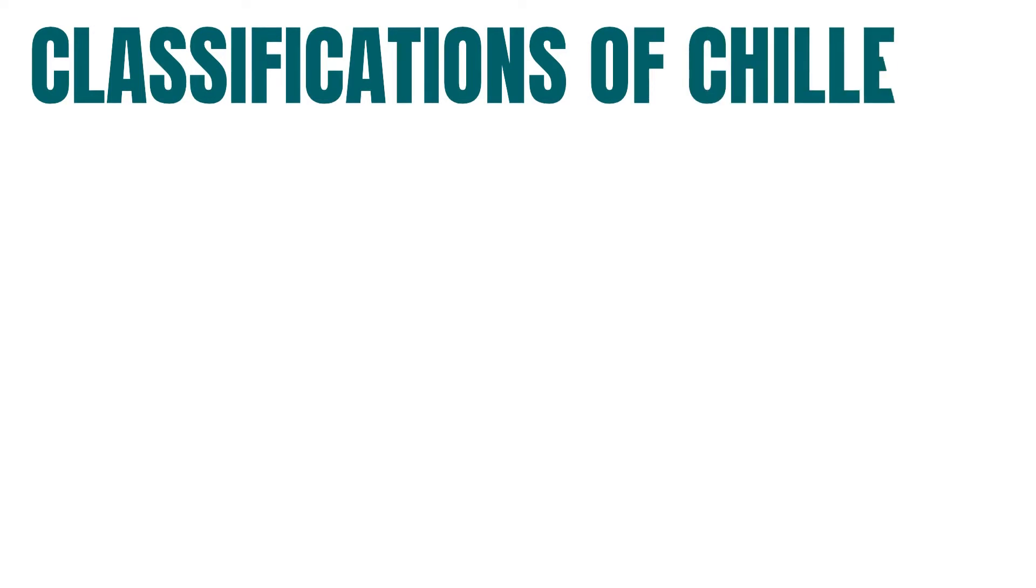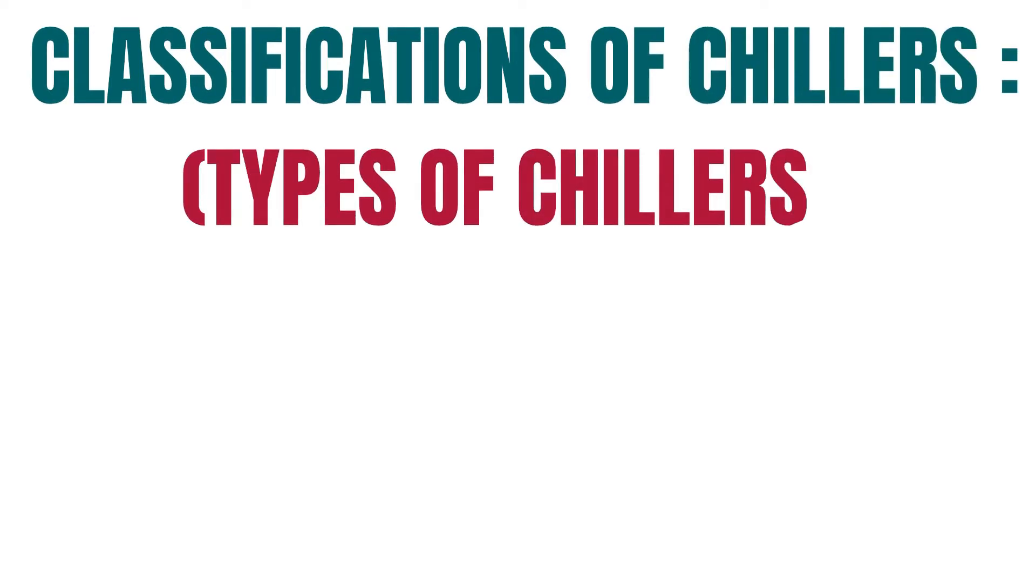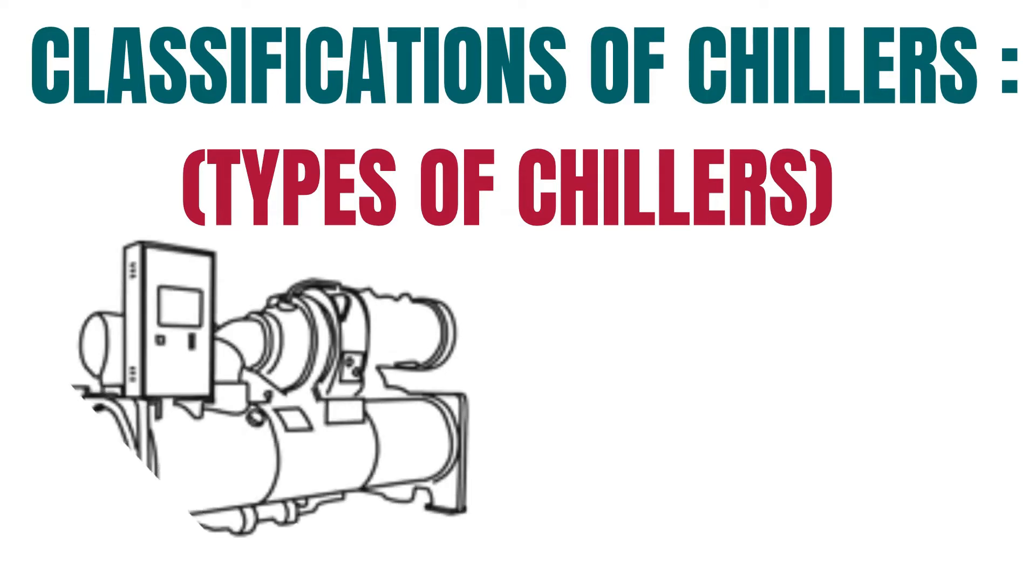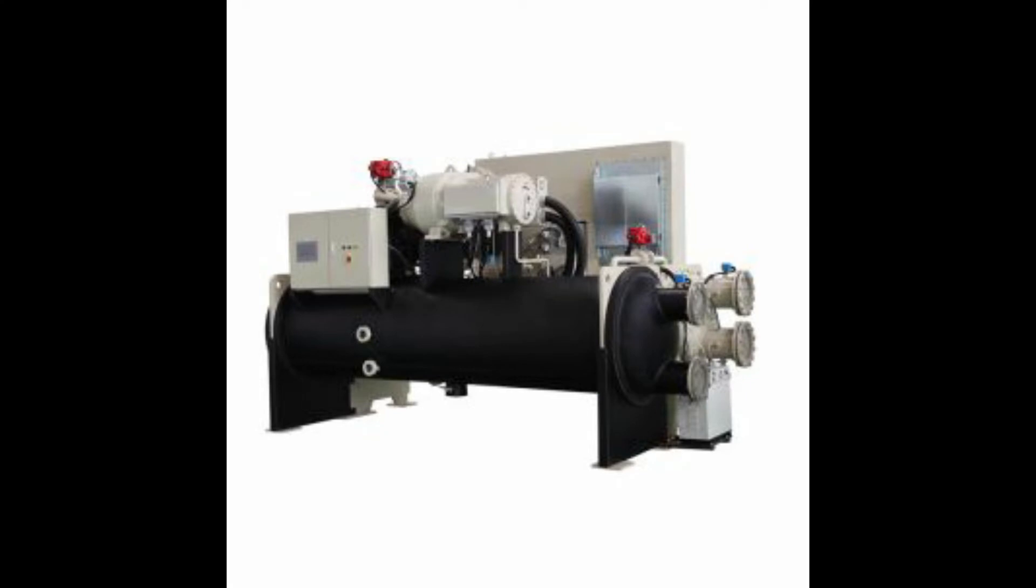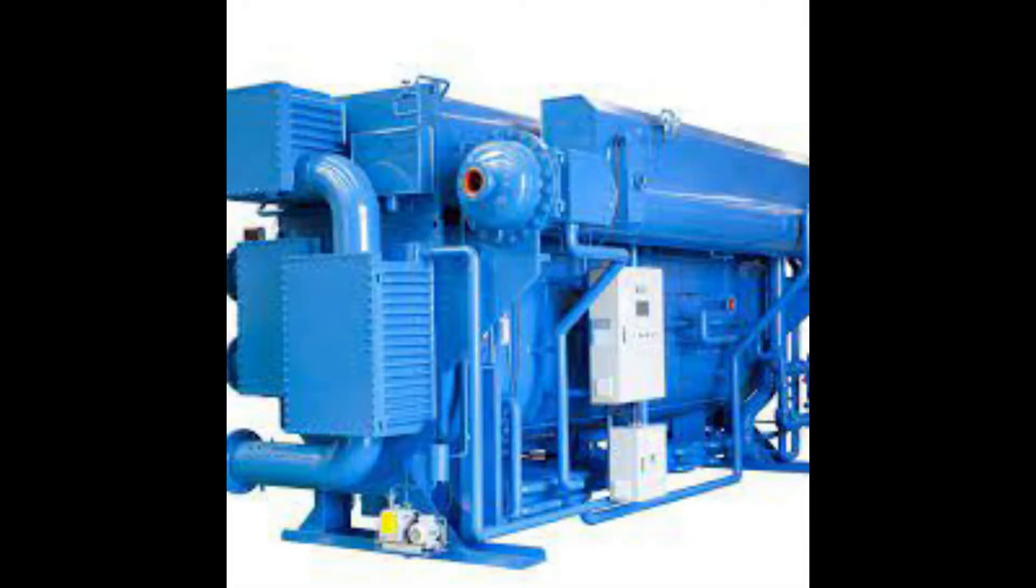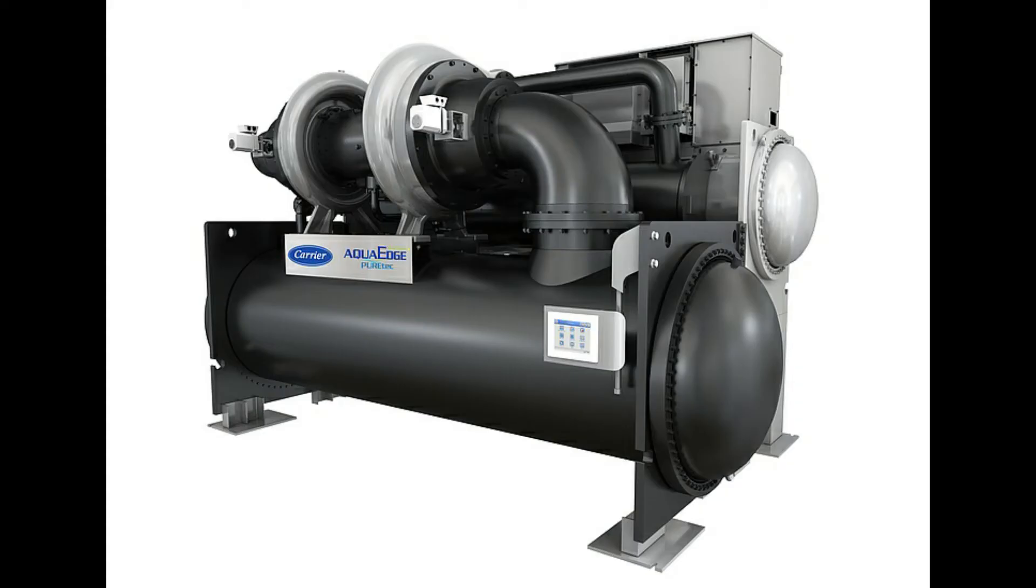Now look into the classifications of chillers in various categories. Chillers fall under two main categories: vapor compression chillers and vapor absorption chillers. Vapor compression chillers use an electrically driven mechanical compressor to force a refrigerant around the system, while vapor absorption chillers use heat energy to move the refrigerant around the system.